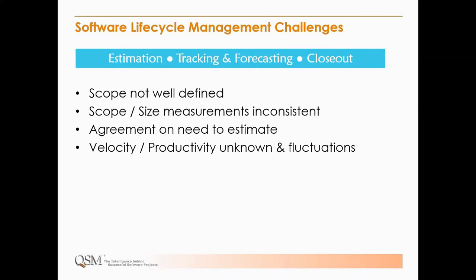In Agile particularly, there may not even be agreement on the need to estimate. Velocity and productivity is either unknown, fluctuating, or unstable — most people readily admit velocity is not constant. Historical data is not available, which is always a challenge. We always want to base estimates on our known capabilities. In the Agile world, when some folks talk about history, they mean just the prior sprints in a release — that's history at a very small, team level.